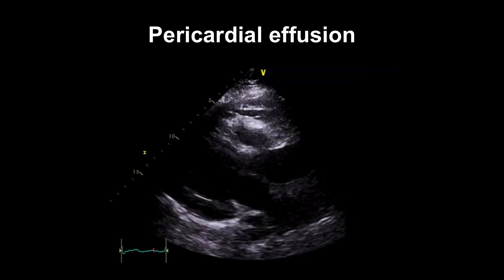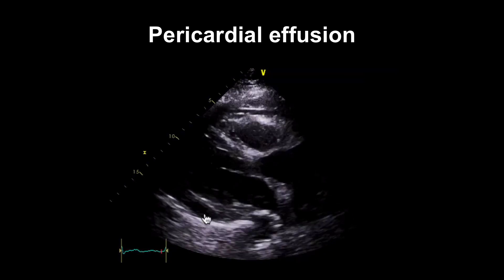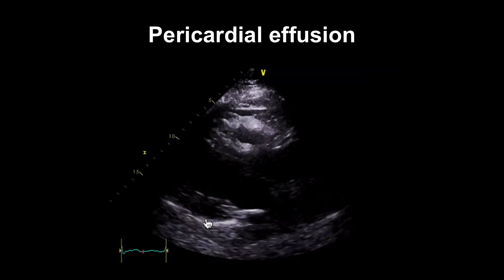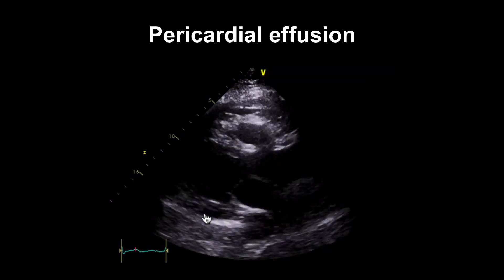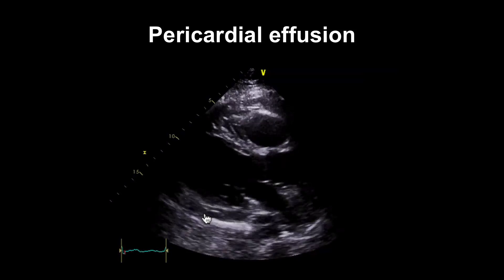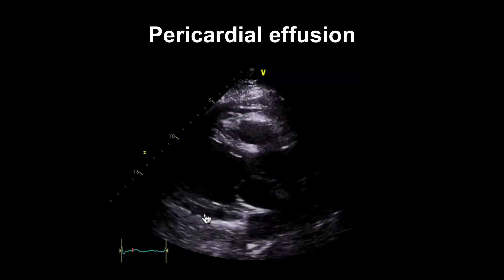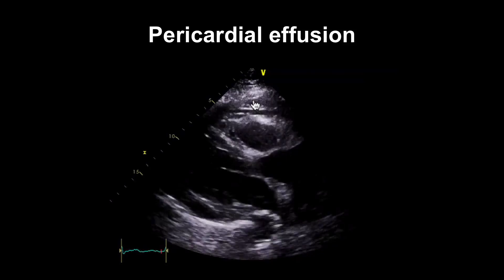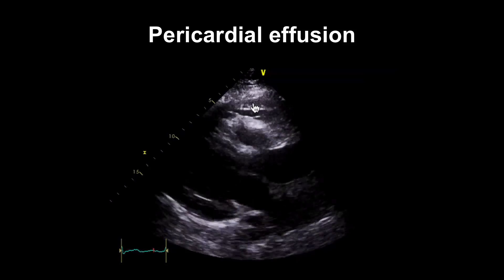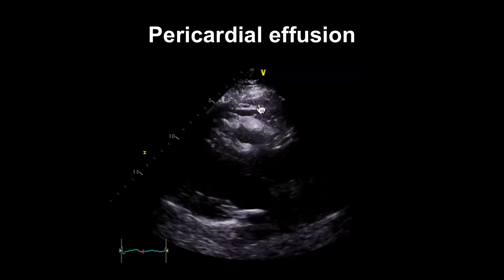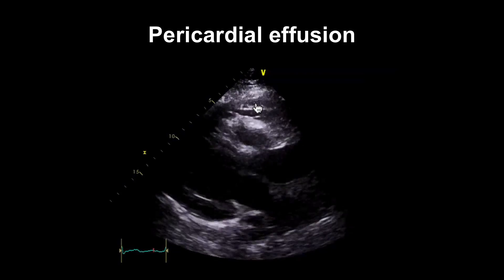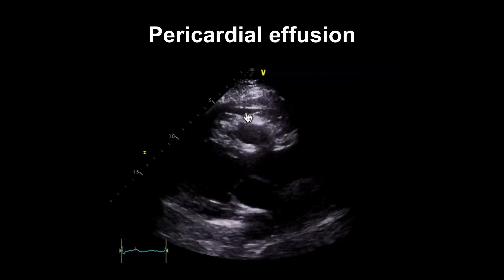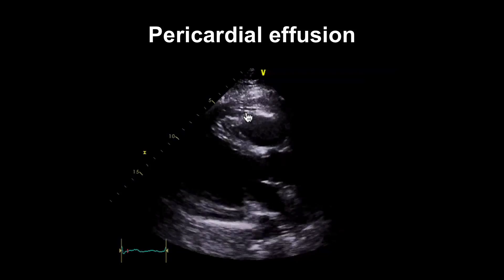This is what a pericardial effusion looks like on echo — it's this black layer here between the two layers of the pericardium. It may be blood, fluid, pus, or a combination; echo can't tell the difference. We also need to be aware of another layer outside that which looks like fat — we see this increasingly in our patients. Notice the echogenicity of that and how different it looks to the pericardial fluid.